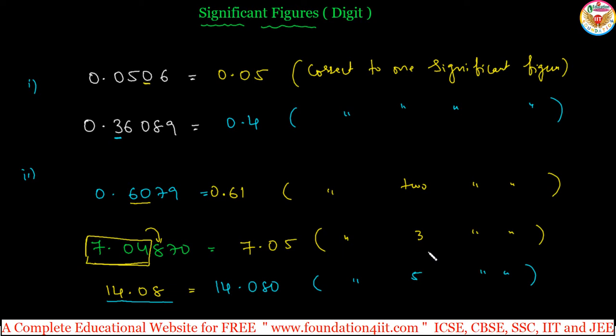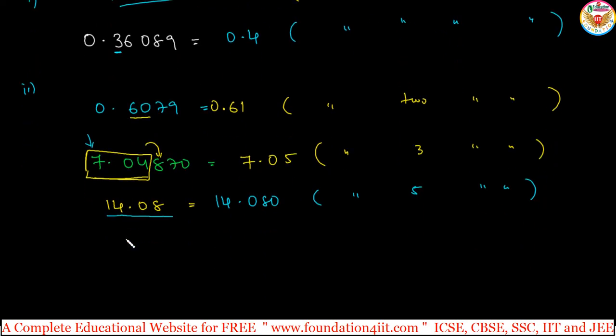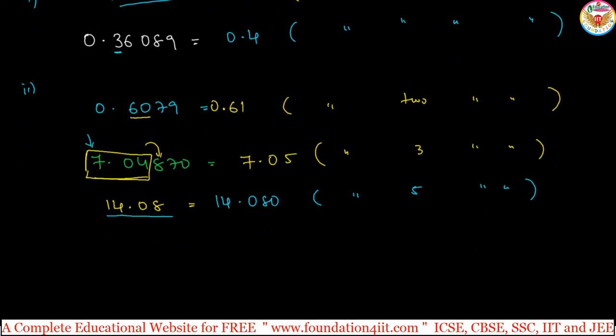Decimal places - that is the previous one - correct to two decimal places, correct to three decimal places, only the decimal part will be seen. We will not see the starting integral part. But when you come to significant figures, even the integral part is just counted.